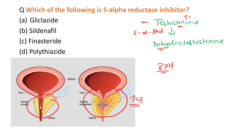Dihydrotestosterone increases the size of the prostate, causing hyperplasia and prostate cancer. So we need to increase testosterone to reduce the size of the prostate. We make a drug that inhibits 5-alpha reductase enzyme. If we inhibit this enzyme, testosterone will not be converted to dihydrotestosterone, and testosterone levels will increase.